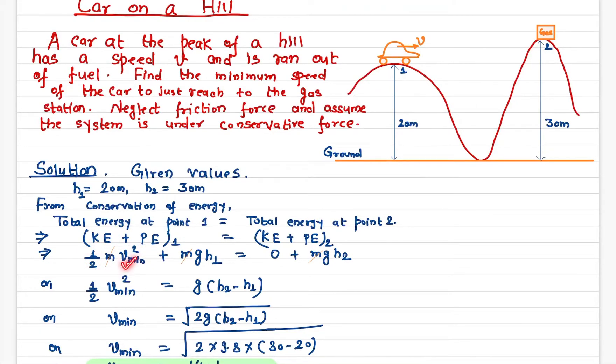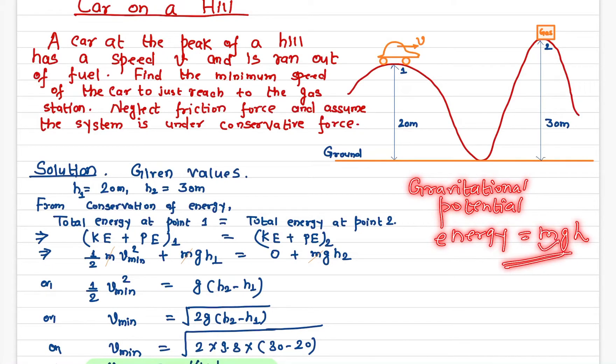I'm using v_min because we're trying to find out the minimum speed that makes this car go to the gas station. The potential energy or gravitational potential energy at this point is mgh₁. The gravitational potential energy formula is mgh, where m is the mass, g is the acceleration due to gravity, and h is the height.